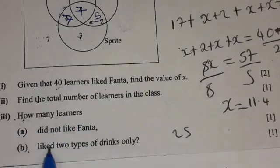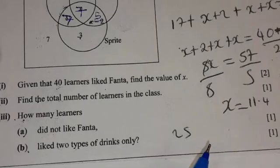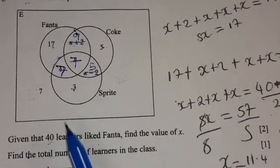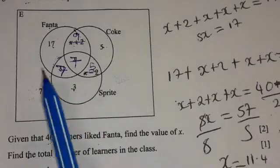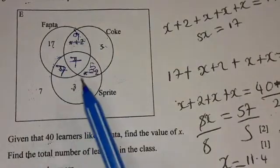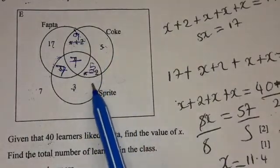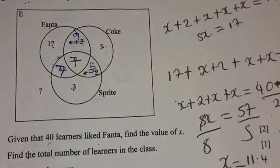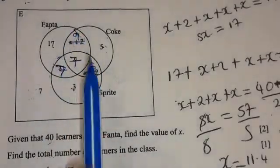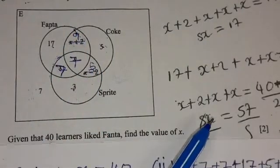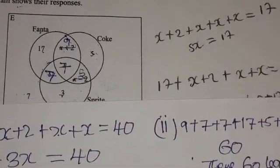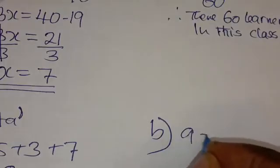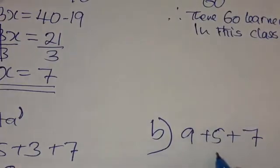Part B asks: how many learners like two types of drinks? Two types of drinks means those on the intersection of exactly two sets. The intersection of Fanta and Coke is 9, the intersection of Coke and Sprite is 5, and the intersection of Fanta and Sprite is 7. So we add 9 plus 5 plus 7, which gives 21.